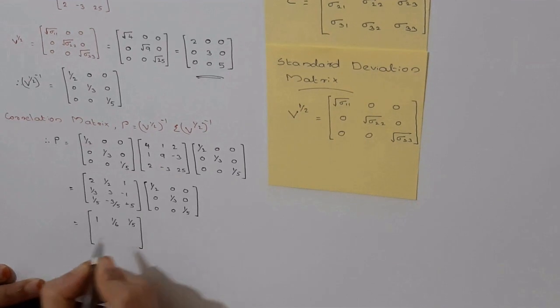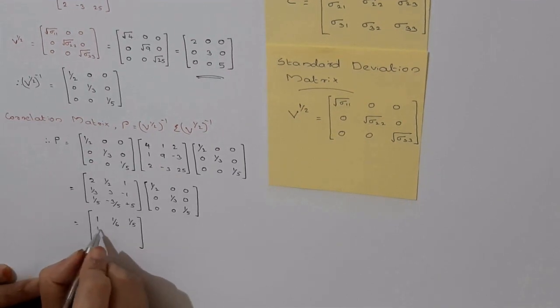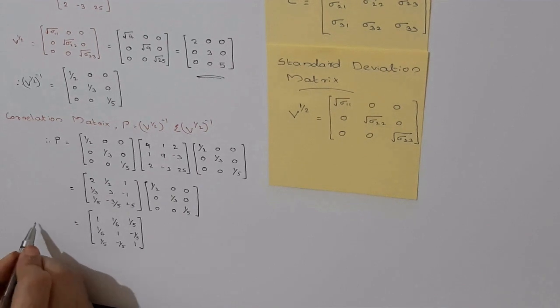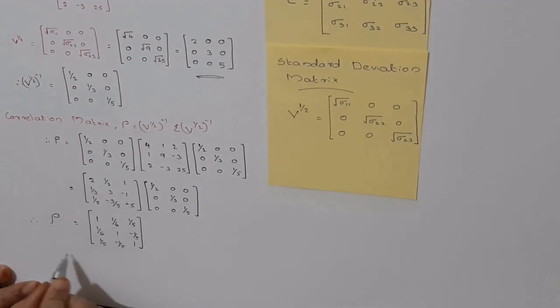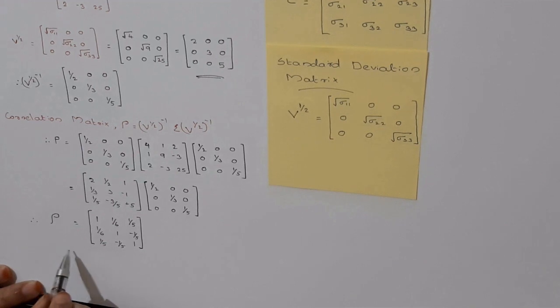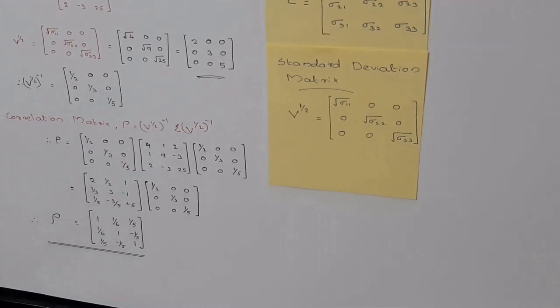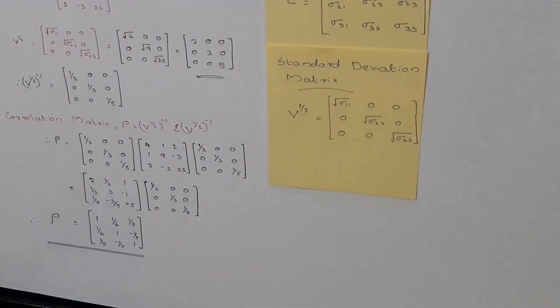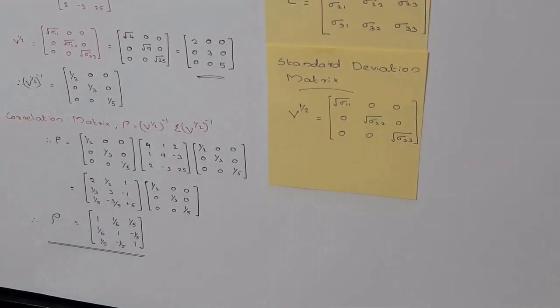Now we will get the final matrix [1, 1/6, 1/5; 1/6, 1, -1/5; 1/5, -1/5, 1]. Finally we got the correlation matrix ρ.